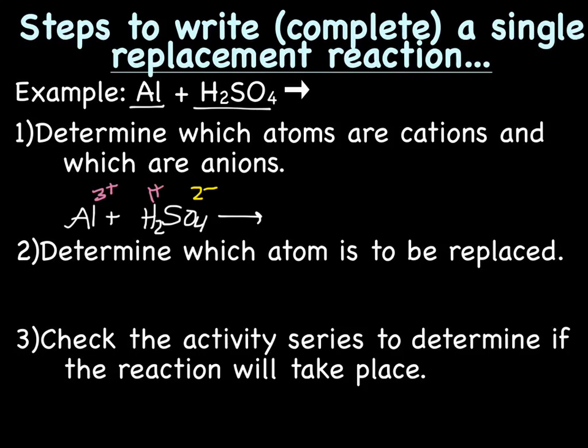Now determine which atom is to be replaced. Aluminum wants to hook up with somebody. Is aluminum trying to hook up with hydrogen or with sulfate? Well, positive and positives don't really like each other. So aluminum is trying to hook up with sulfate. So aluminum is going to fight hydrogen for sulfate.